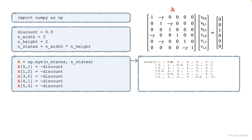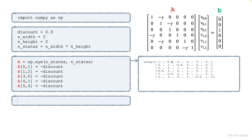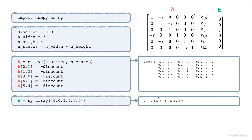So for example, we have this minus gamma entry over here. And then we construct the right-hand side vector, let's call it B. Its only non-zero element is this one. So we can build that array with NumPy. We can also print this, and this is the only non-zero element.